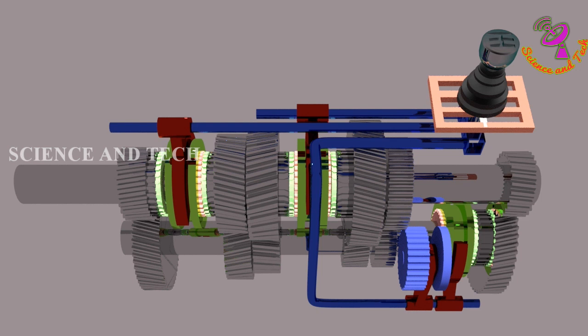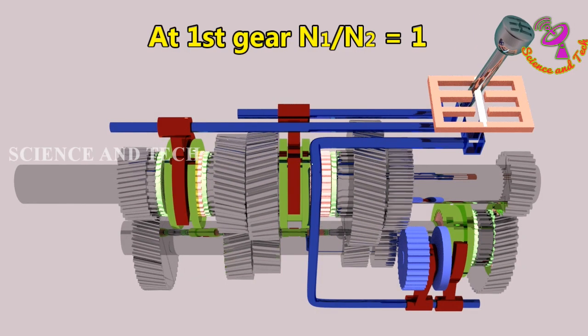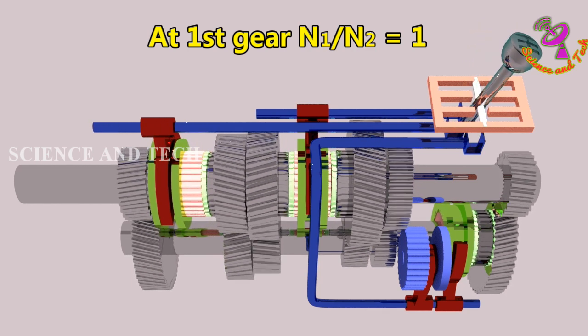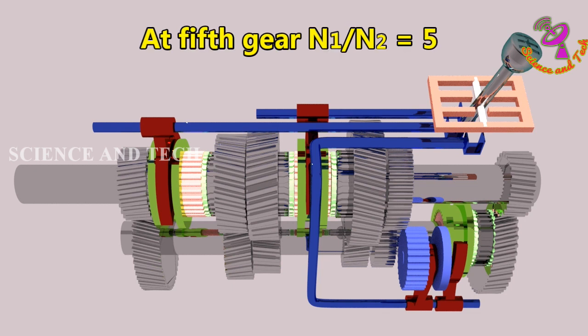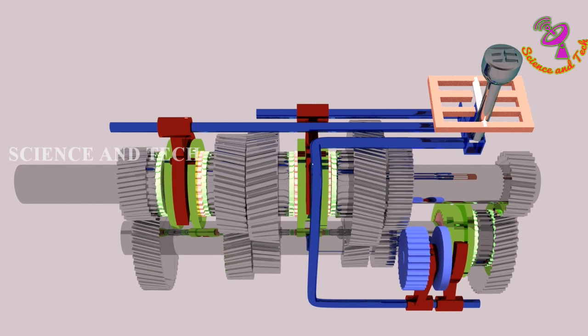At first gear, 4 or 5 revolutions of counter gear is equal to 1 revolution of output gear. If we increase gear, it will increase inversely proportional to counter shaft gear. For example, at fifth gear, 1 revolution of counter shaft gear is equal to 4 or 5 revolutions of output gear.